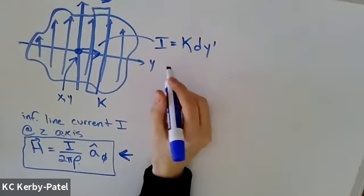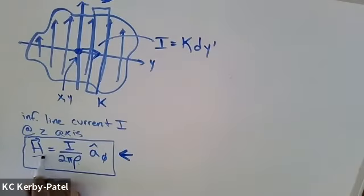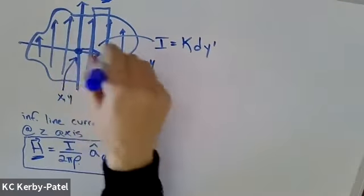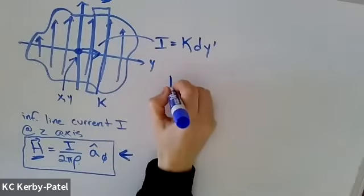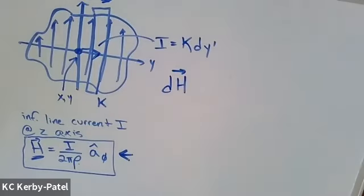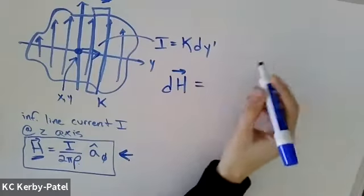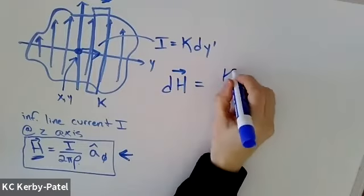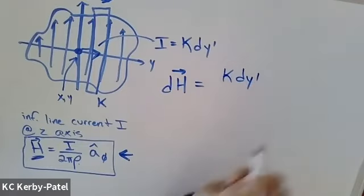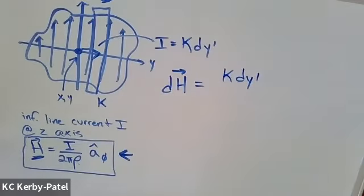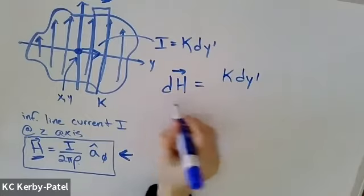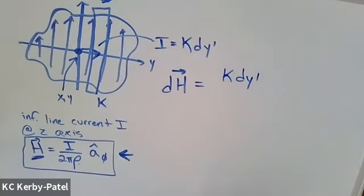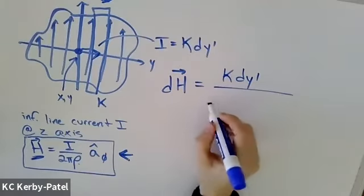If I have this magnetic field but I would like to have it move around, I'm going to write it as dH. And the current is going to be replaced by K dy prime, because I'm going to do an integral. So this is the differential element of the magnetic field. I'm still going to have a 1 over 2π.